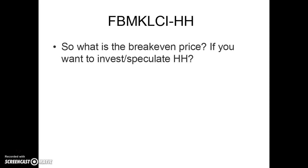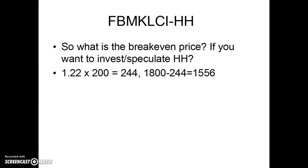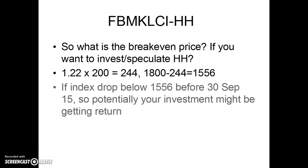If you want to invest for speculation, 1.22 times 200 equals 244. Reversing the calculation: 1800 minus 244 equals 1556. So for HH to break even, the index needs to drop to 1556, making the intrinsic value 1.22. If the index drops below 1564 (approximately), you potentially start making a return.